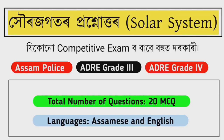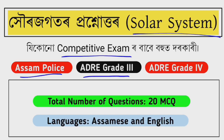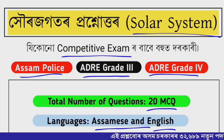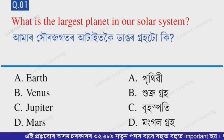Hello dear aspirant, welcome back to learning. Today in this video you are going to learn the most important multiple choice questions of the solar system. These questions are very important for competitive exams, especially for police, grade 3, and grade 4 exams. There are about 20 questions prepared in English medium for competitive exam preparation.